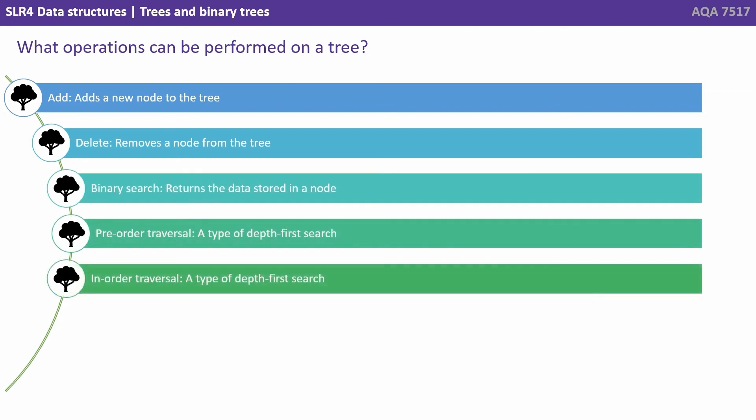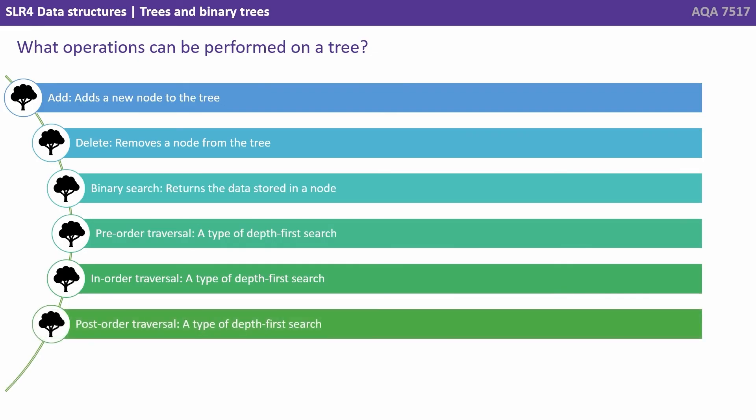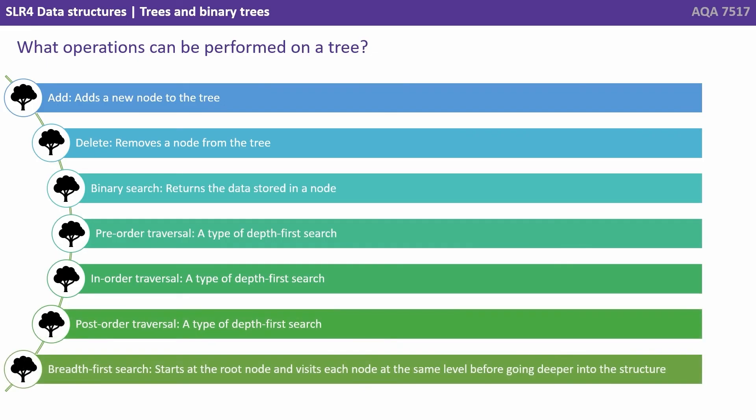Pre-order, in-order and post-order traversal. These are a type of depth first search and a breadth first search.